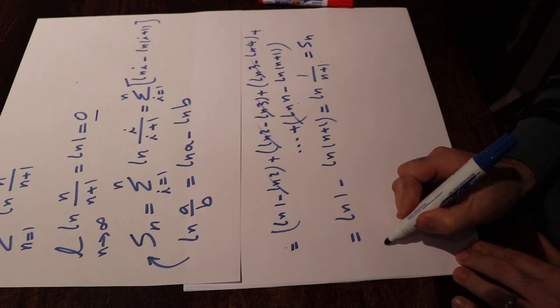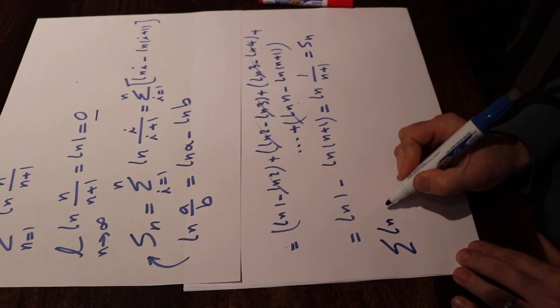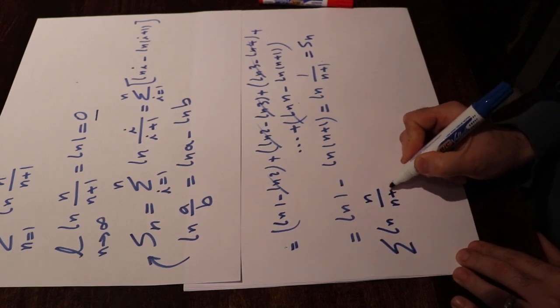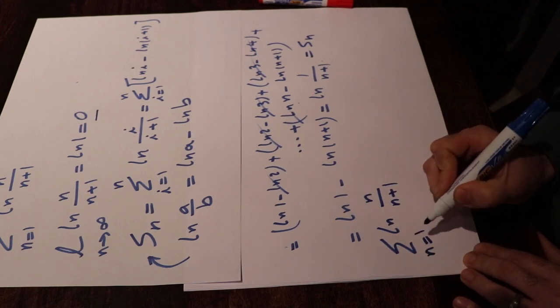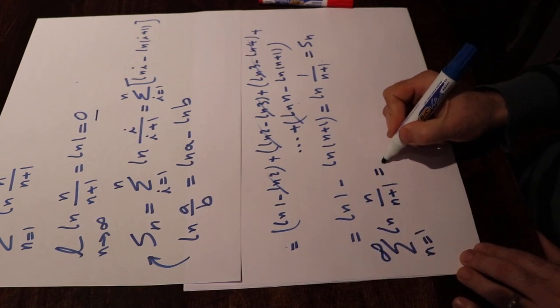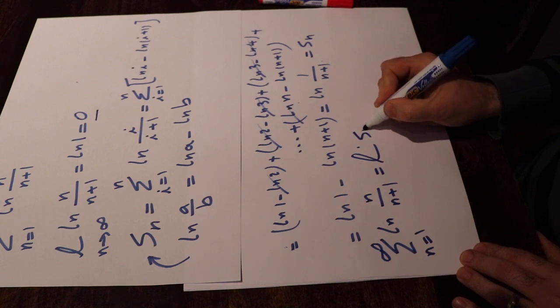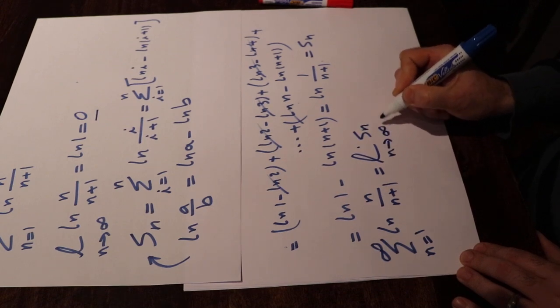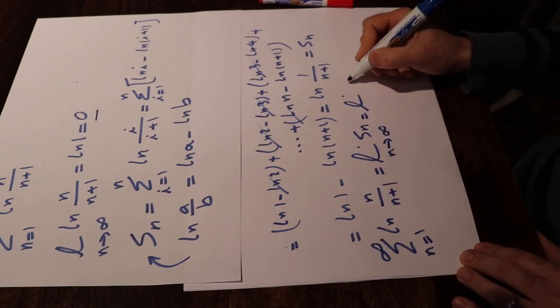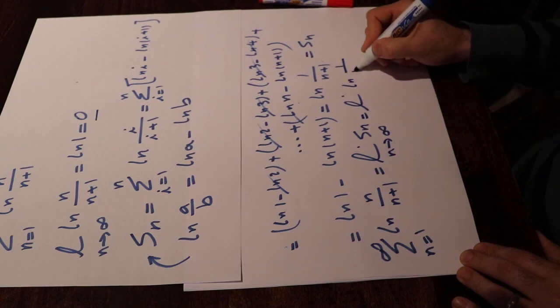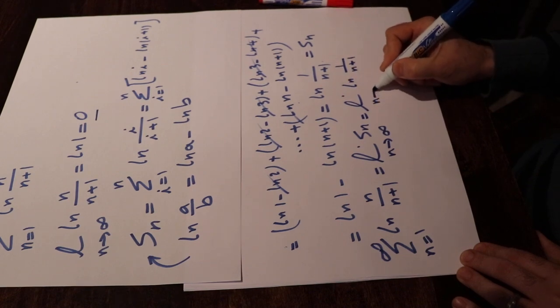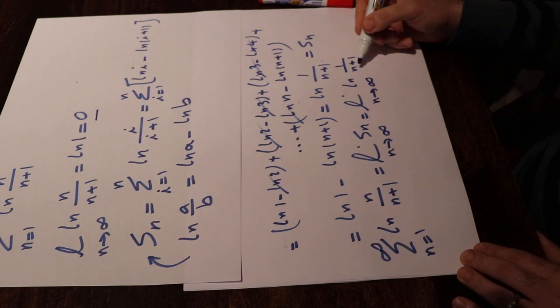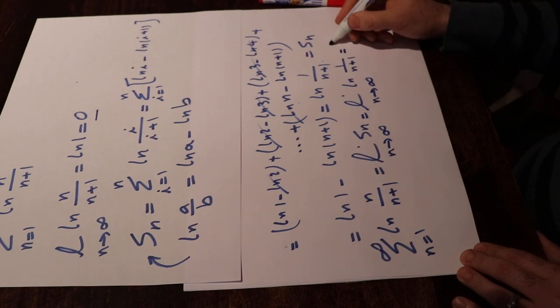So therefore, sigma ln n divided by n plus 1, n from 1 to infinity, this sigma will be equal to limit Sn when n goes to infinity. In other words, that is equal to limit ln 1 divided by n plus 1 when n goes to infinity. And 1 divided by infinity is equal to 0, and therefore this will be ln 0.